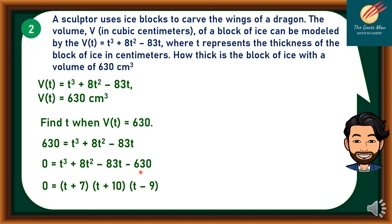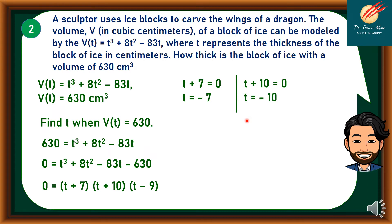Using the zero property: if t + 7 = 0, then t = −7. If t + 10 = 0, then t = −10. And if t − 9 = 0, then t = 9. Notice that we cannot use t = −7 or t = −10, because there is no such thing as negative thickness. Therefore, we will only consider t = 9.